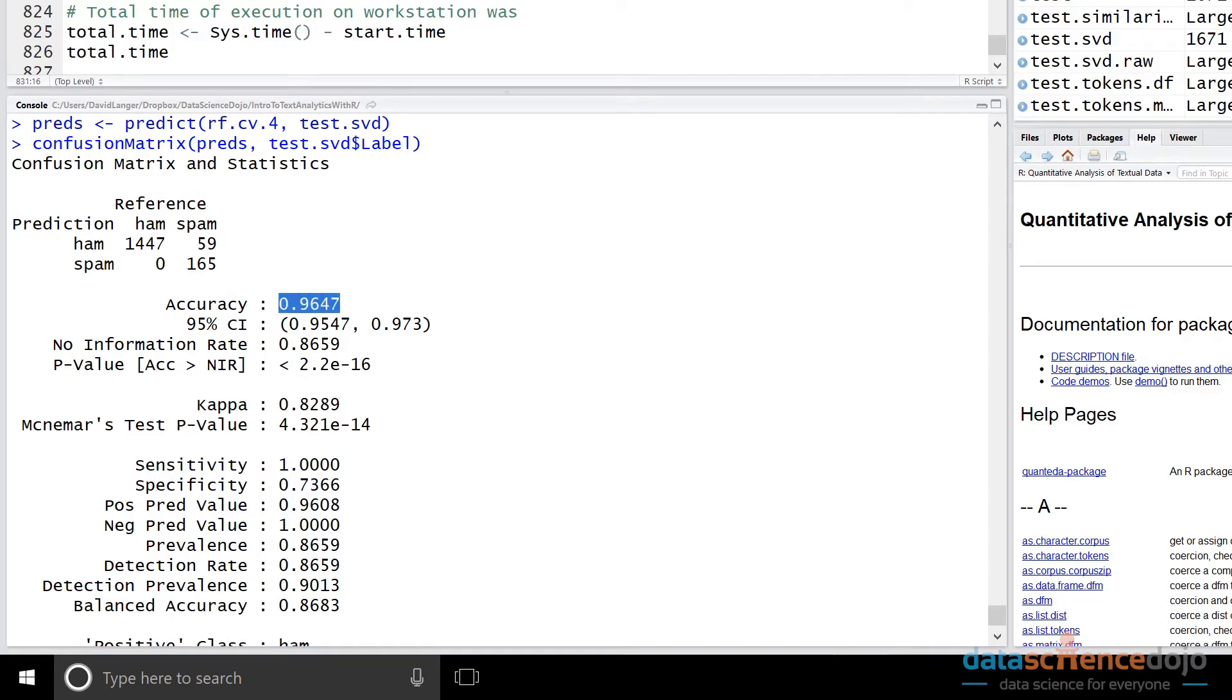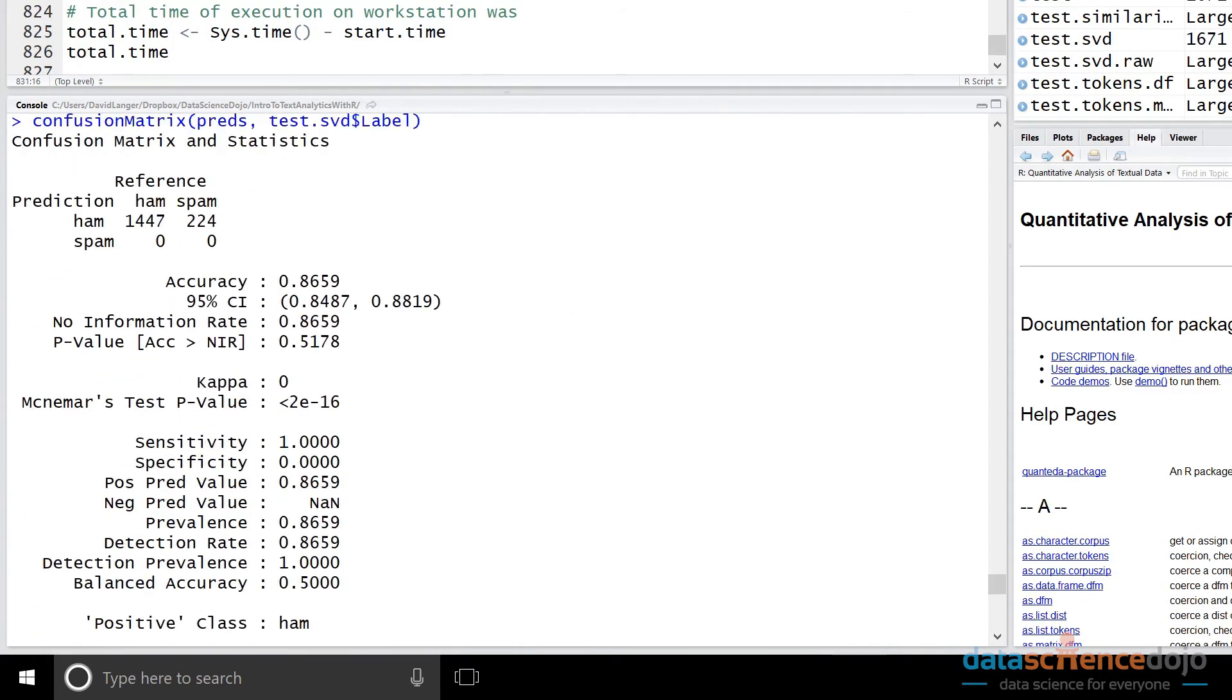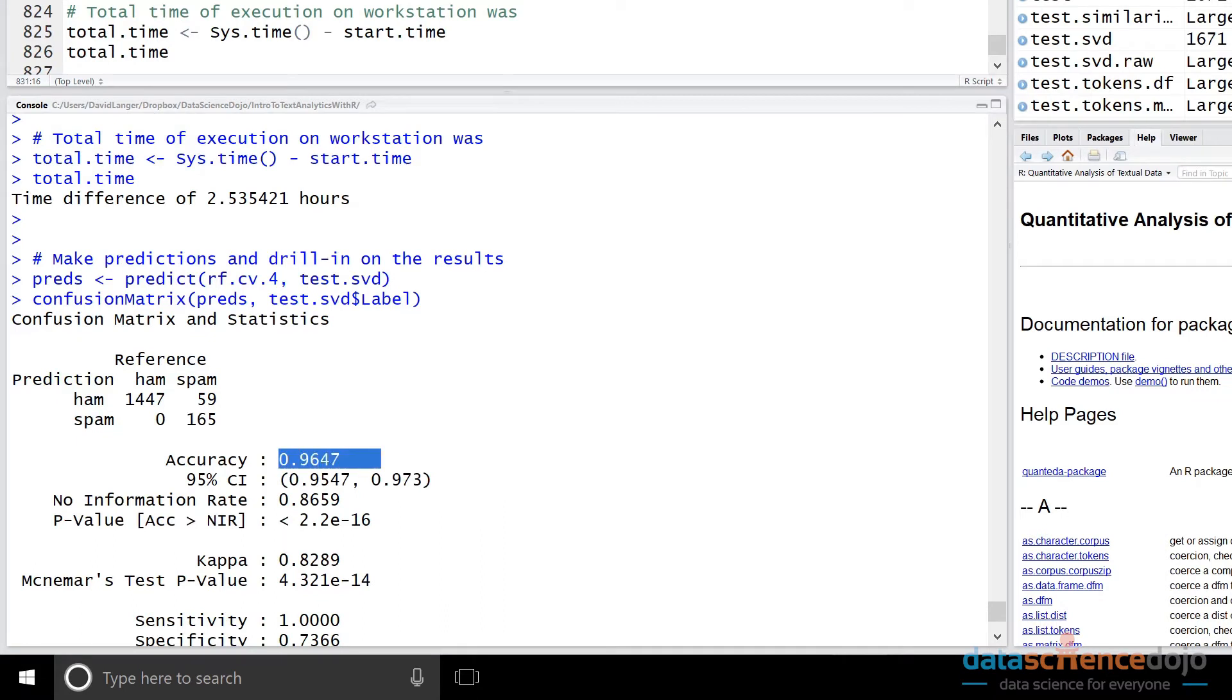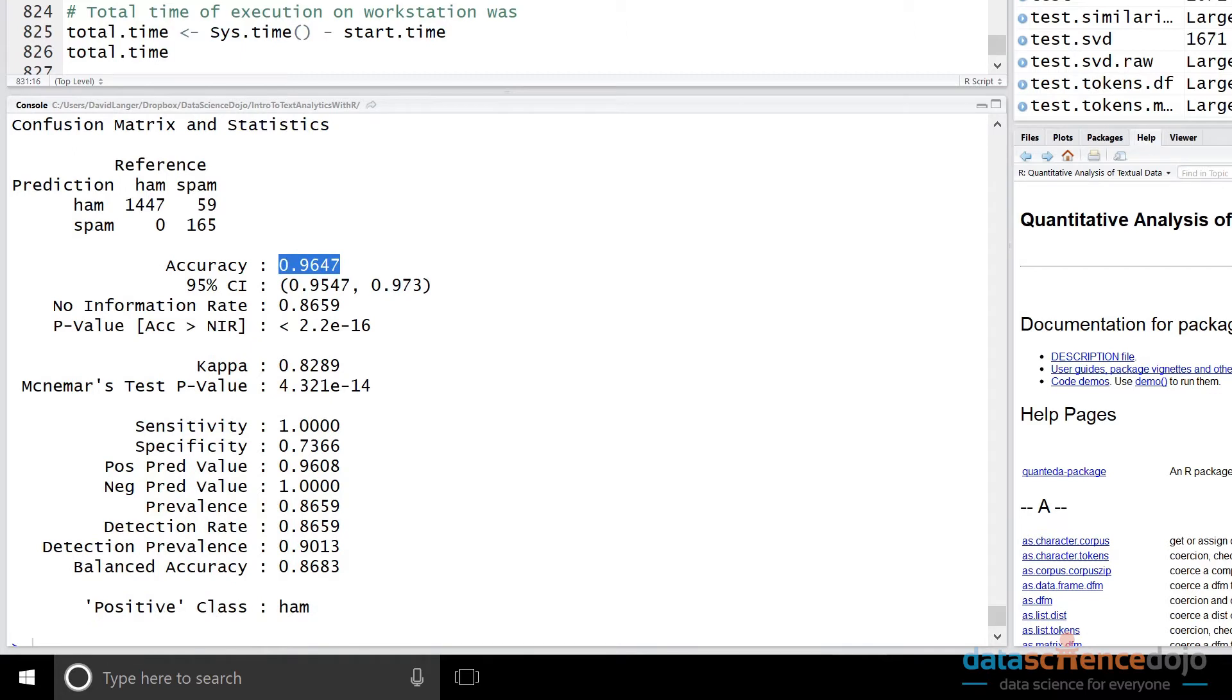So I'm using the cross-validation run and the predict function will automatically pick out the best final trained random forest automatically and create predictions on our test data set. And then we're using the confusion matrix function out of the carrot package per usual. And we can see the results here. So you'll notice that our accuracy jumped up a lot by almost 10%. We had 86.59% and now we have 96.47%.